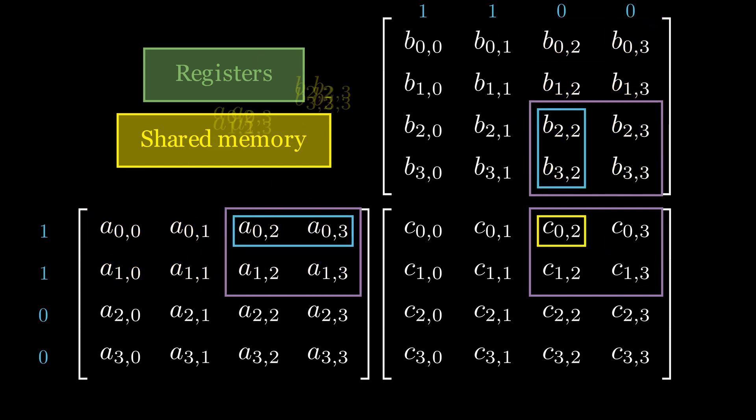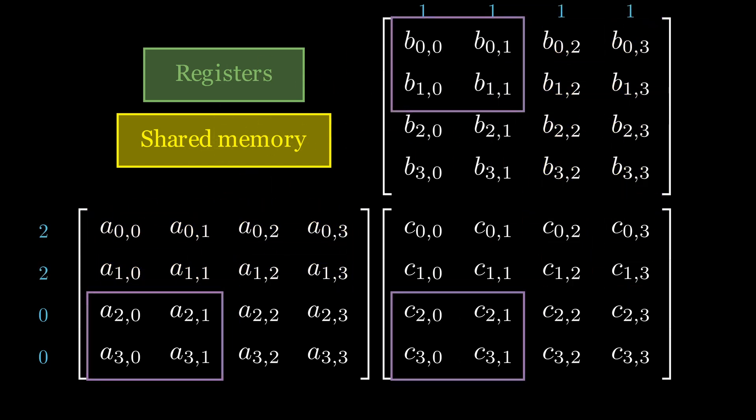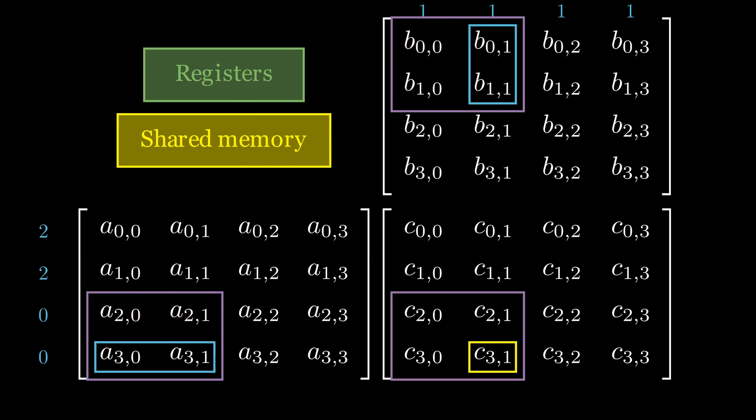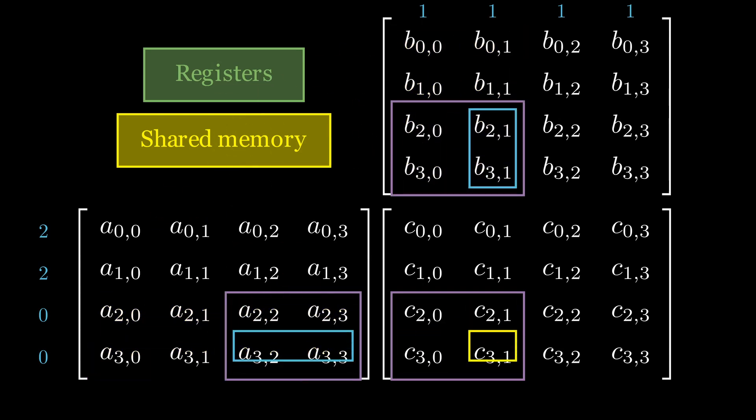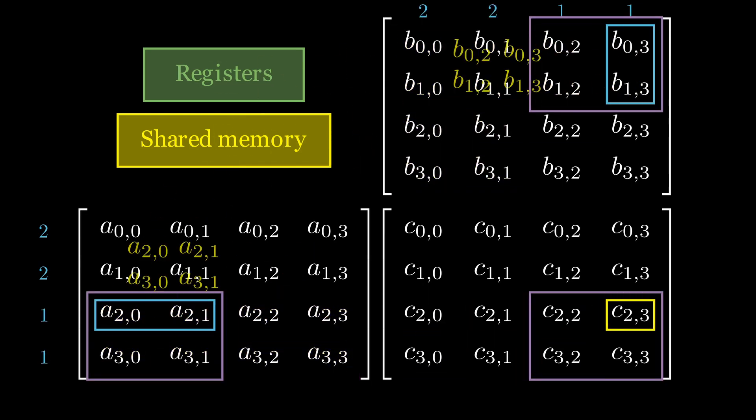In the end, we have a significant reduction in loads from global memory. In our case, we managed to half it, but it highly depends on the shape of our matrices and the size of our tiles.